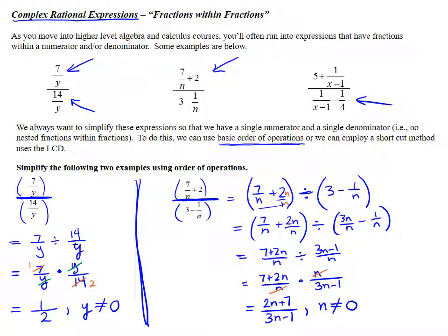So again, with order of operations, we want to think about there being grouping symbols around the numerator and denominator. Work on those separately. Then think about dividing the fractions that are left. And to do that, we flip and multiply. So that would be using order of operations to simplify these complex rational expressions.